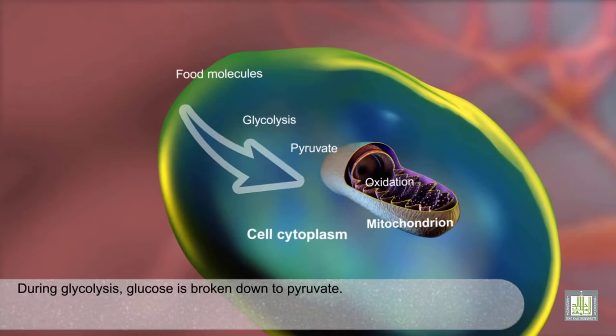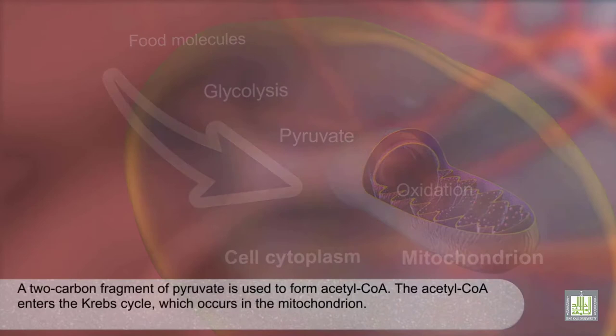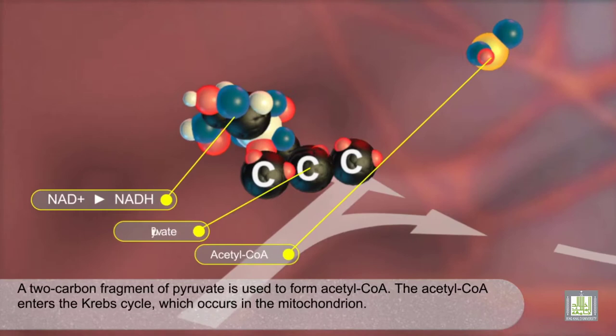During glycolysis, glucose is broken down to pyruvate. A two-carbon fragment of pyruvate is used to form acetyl-CoA. The acetyl-CoA enters the Krebs cycle, which occurs in the mitochondrion.